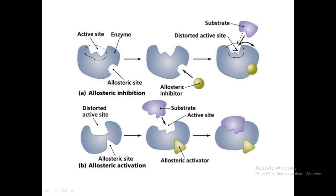In the case of an allosteric activator, when it binds to the allosteric site, a conformational change in the enzyme takes place that changes the shape of the substrate binding site to allow binding of the substrate. As a result, the substrate can bind and the reaction proceeds. This is how allosteric regulation takes place. We will discuss cooperativity and the sigmoidal curve in the next videos of this allosteric regulation series.